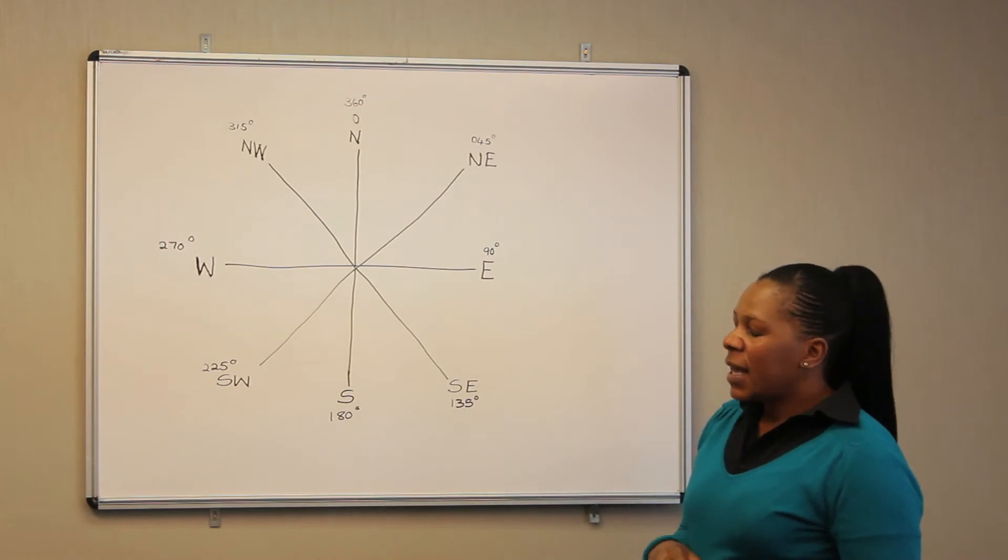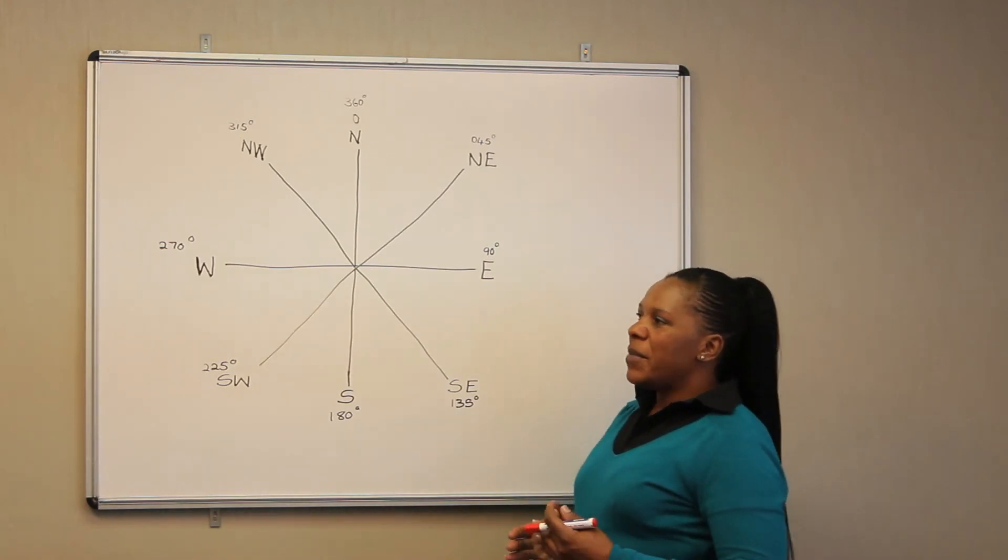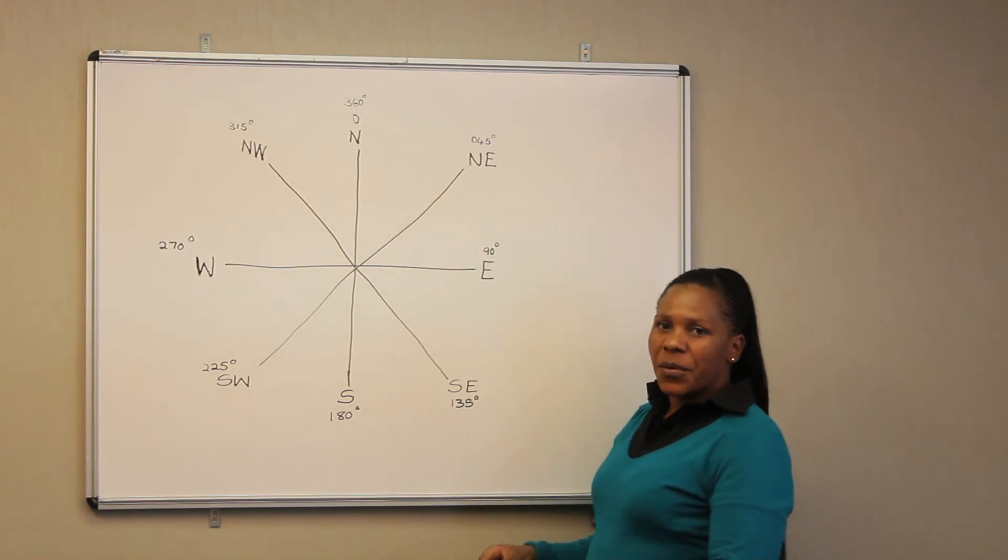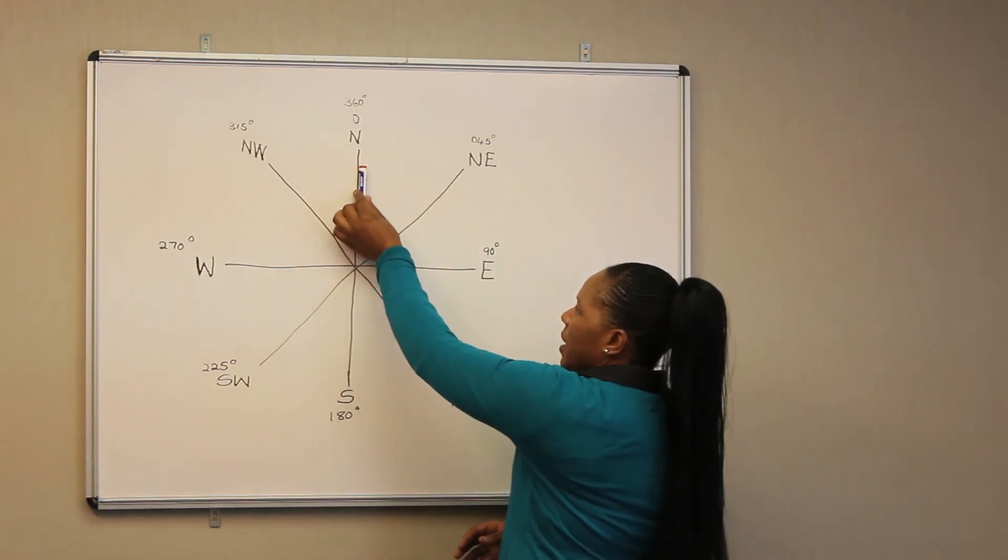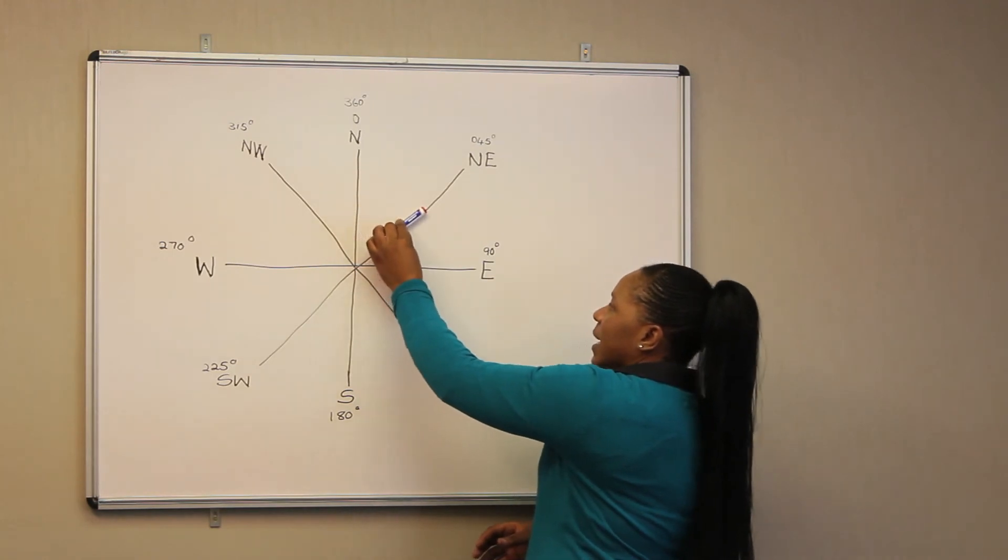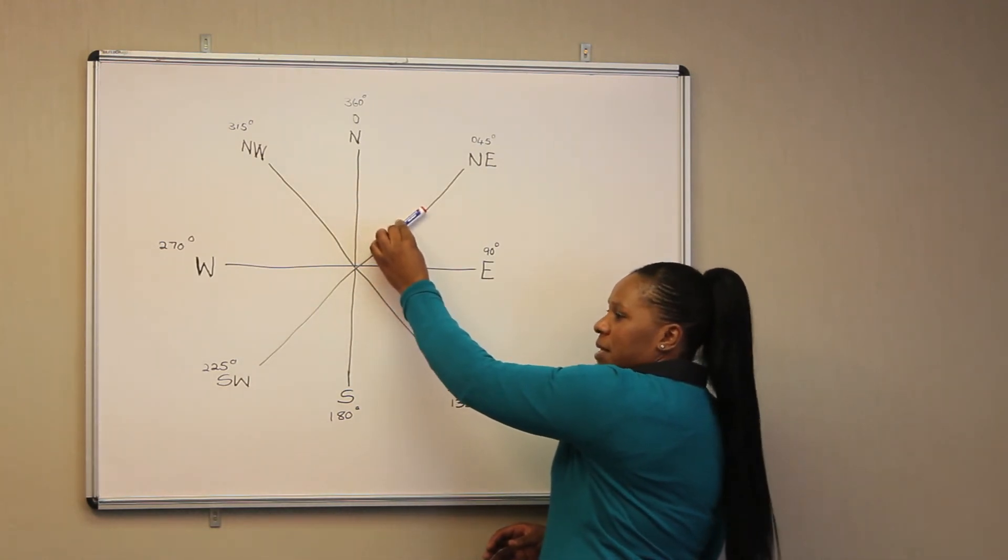Directions can be expressed as bearing on a map. In this case, when you are measuring the angle between North and Northeast, we are going to start from the North, measuring in a clockwise direction, and this is going to be a 45 degree angle.